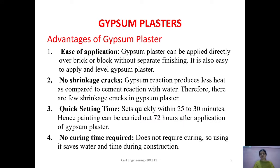Coming to the advantages of gypsum plaster. Ease of application: gypsum plaster can be applied directly over brick or block without separate finishing. No shrinkage cracks: compared to cement, gypsum when it reacts with water produces less heat, therefore there are few shrinkage cracks in gypsum plaster.